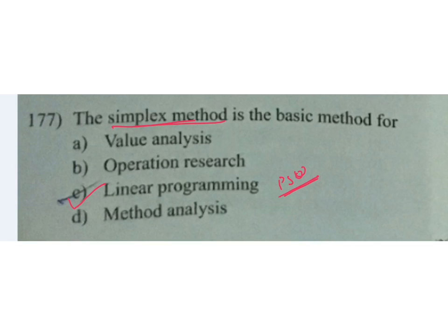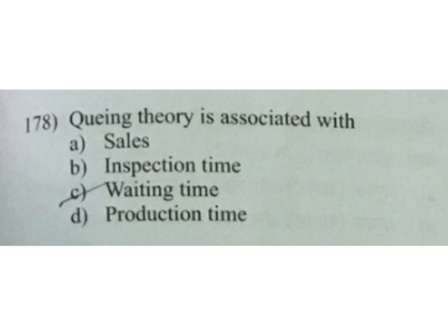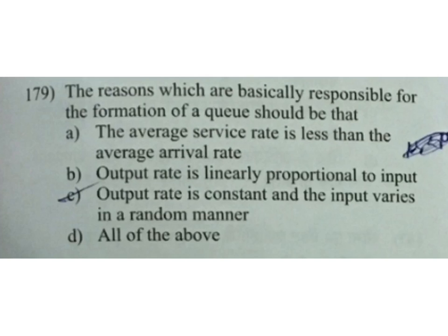The reasons which are basically responsible for the formation of a queue: A the average service rate is less than the average arrival rate, B output rate is linearly proportional to input, C output rate is constant and input varies in a random manner. All of the above is the answer.